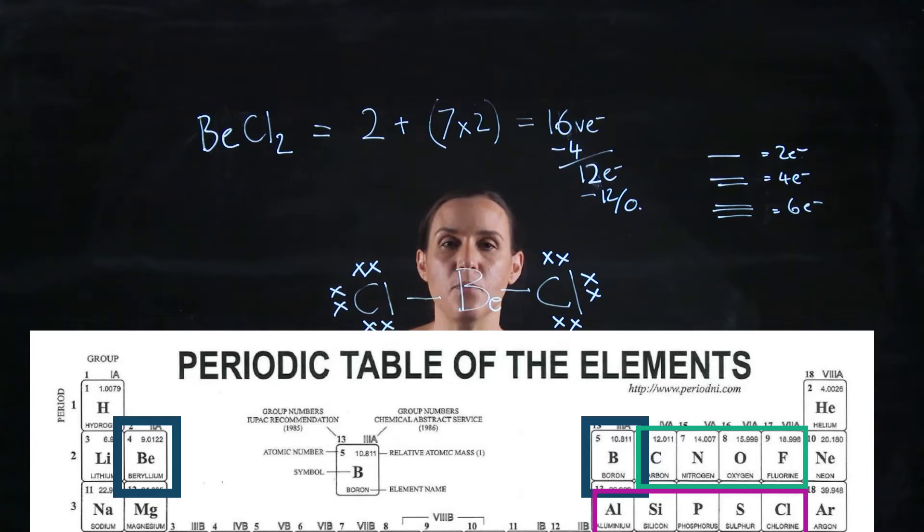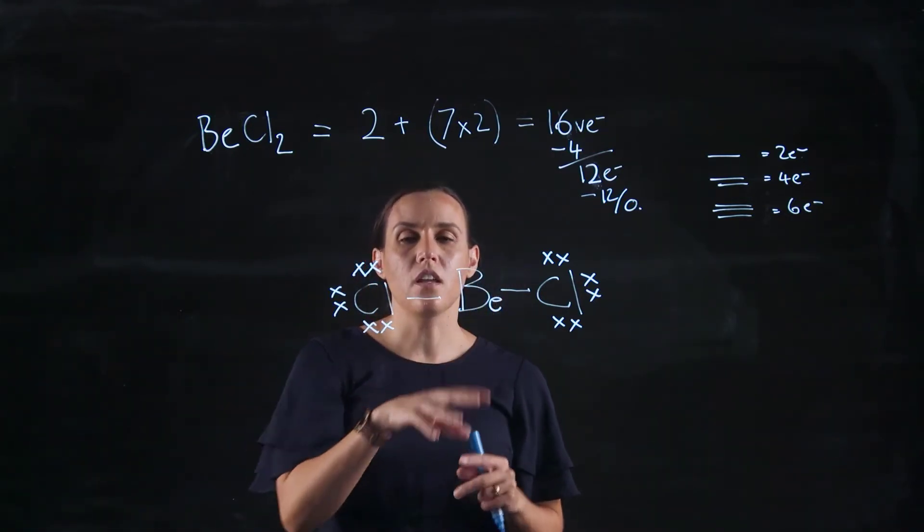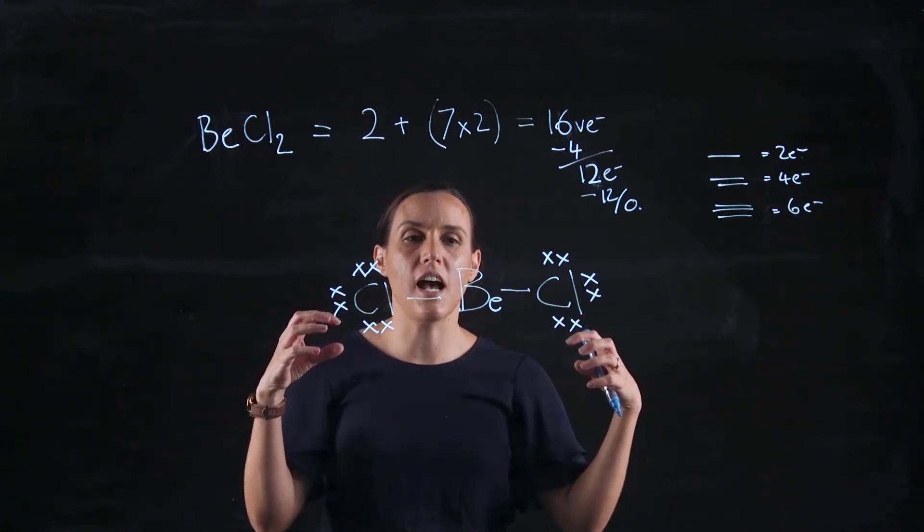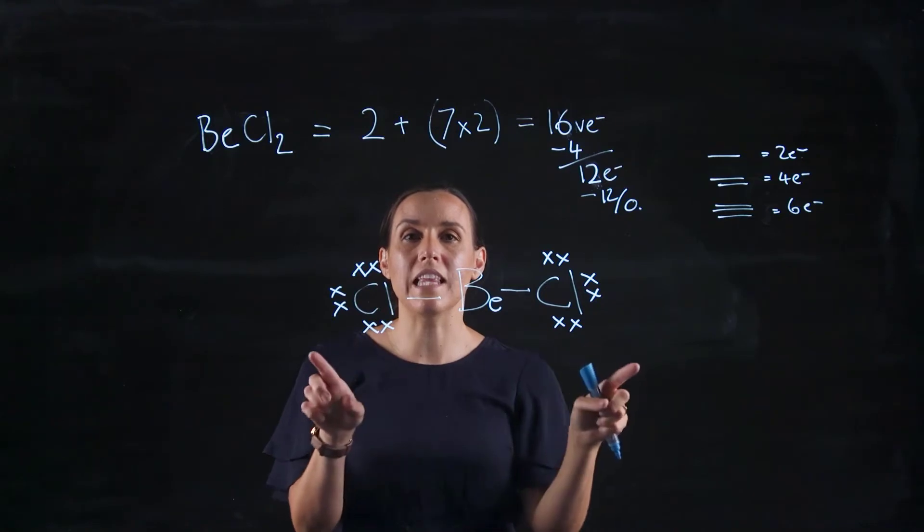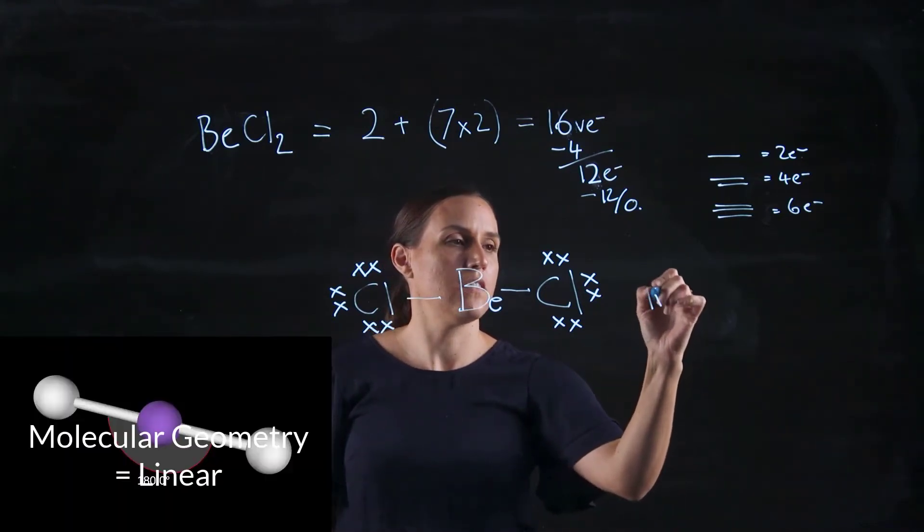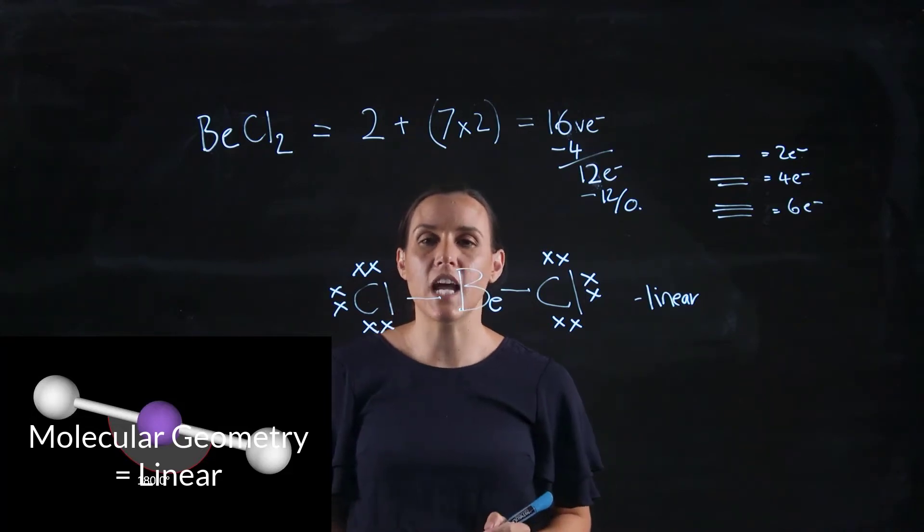So thinking about the shape on this one, you've got beryllium which is in the middle, you've got two chlorines on either side, and there's no lone pairs around that beryllium. So it would be a linear conformation.